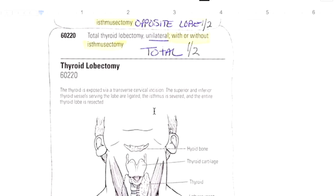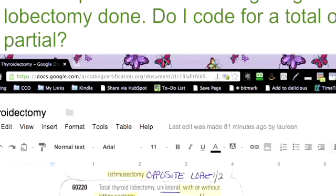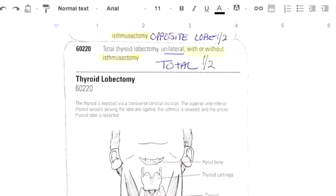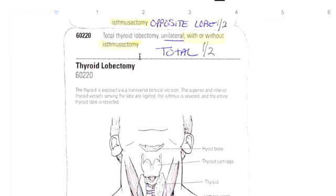60220 is a total thyroid lobectomy unilateral. So that would be the answer for your question here, having a right thyroid lobectomy done. If they're removing the whole lobe, that's what you're going to use, 60220.